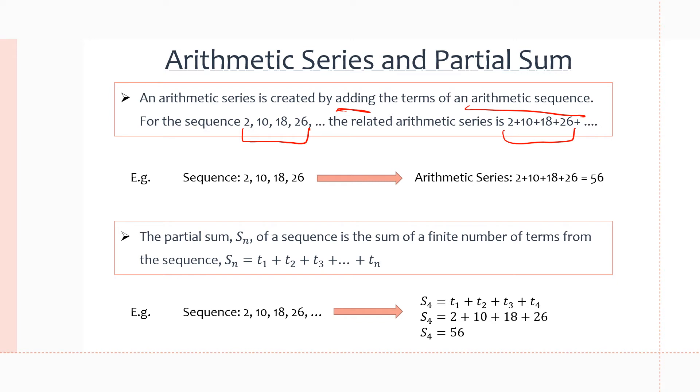So if we take a look at our example down here, it's just the same example we have in the box. But with the arrow, you can see how it goes from a sequence to a series. And here it should actually say arithmetic sequence, because it is an arithmetic sequence. We have the same common difference of 8 between each term, so we're adding 8 to get to the next term every time.